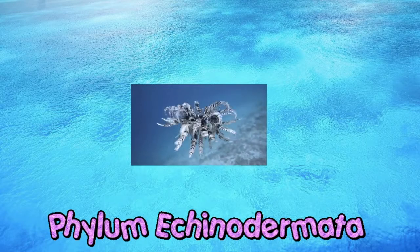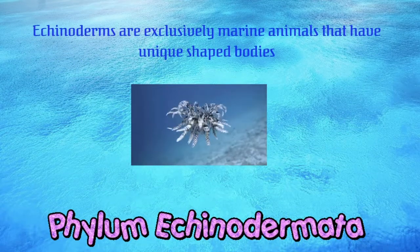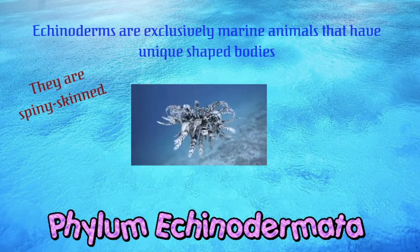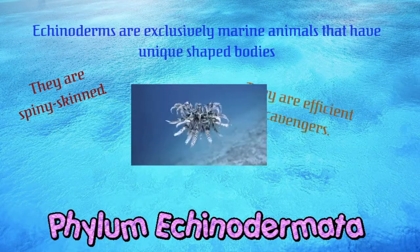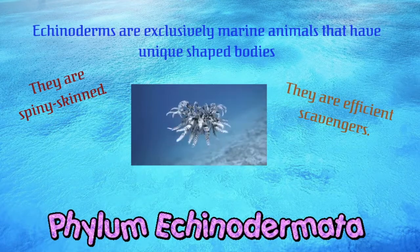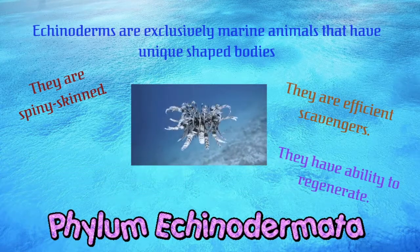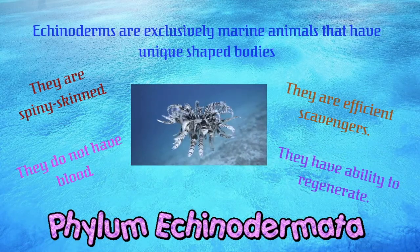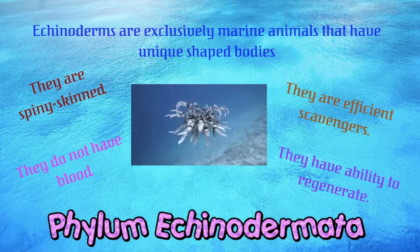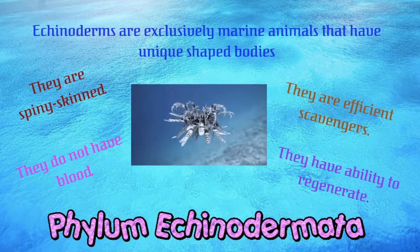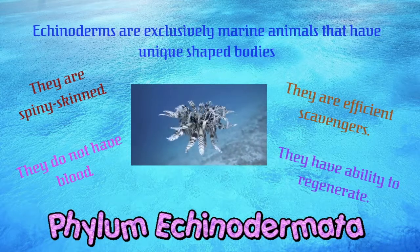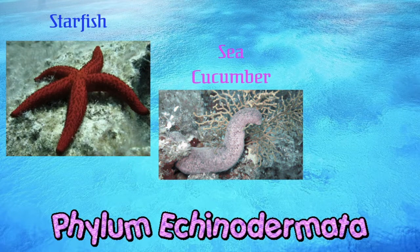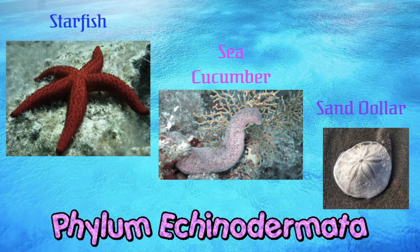Let's now talk about phylum Echinodermata. Echinoderms are exclusively marine animals that have uniquely shaped bodies. These organisms are spiny-skinned. Echinoderms are efficient scavengers of decaying matter on the seafloor and have the ability to regenerate their missing body parts. Lastly, echinoderms don't have blood — they have what's called a water vascular system instead, which carries oxygen to the vital organs. Starfish, sea cucumber, sand dollars, and more are examples of phylum Echinodermata.